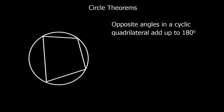Opposite angles in a cyclic quadrilateral add up to 180 degrees. A cyclic quadrilateral is just a four-sided shape in a circle — cyclic like circle, quadrilateral means four-sided shape. So a four-sided shape in a circle, and the opposite angles — this one and this one — add up to 180 degrees. And these two here also add up to 180 degrees.